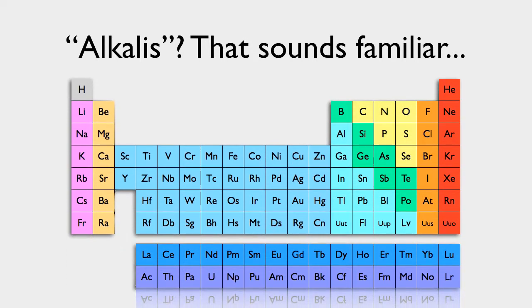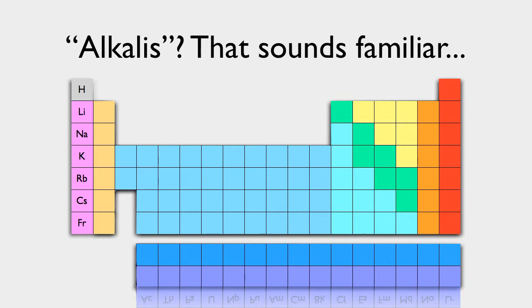Alkalis, that should sound familiar to you. That, of course, is a group in the periodic table. The left-hand group. Actually, hydrogen doesn't count as an alkali, even though we put it in the far left column because it just has one electron in its outer shell.